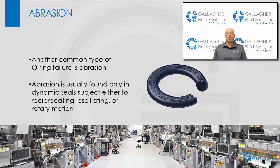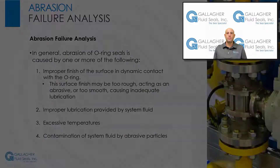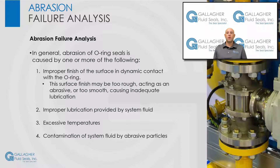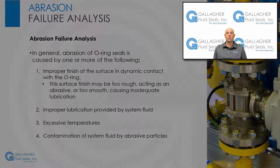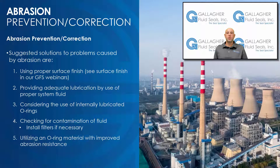Another rather common type of O-ring failure is abrasion. This is usually found only in dynamic seals subject to either reciprocating, oscillating, or rotary motion. In general, abrasion of O-ring seals is caused by one or more of the following: improper finish of the surface in dynamic contact with the O-ring — the surface finish may be too rough, acting as an abrasive, or the surface might be too smooth, causing inadequate lubrication due to the inability of the surface to hold a lubricant — improper lubrication provided by system fluid, excessive temperatures, or contamination of system fluid by abrasive particles.